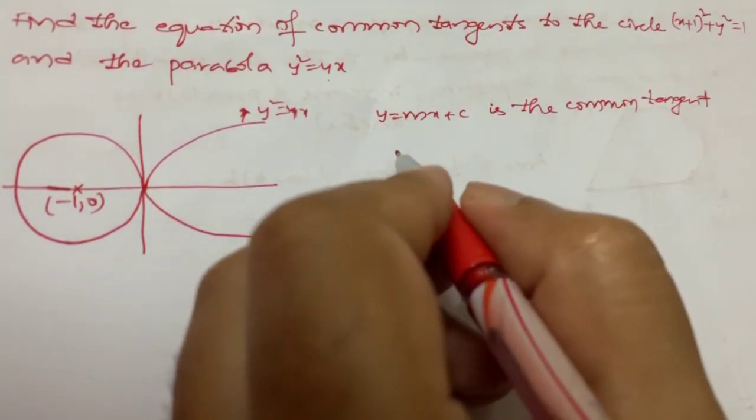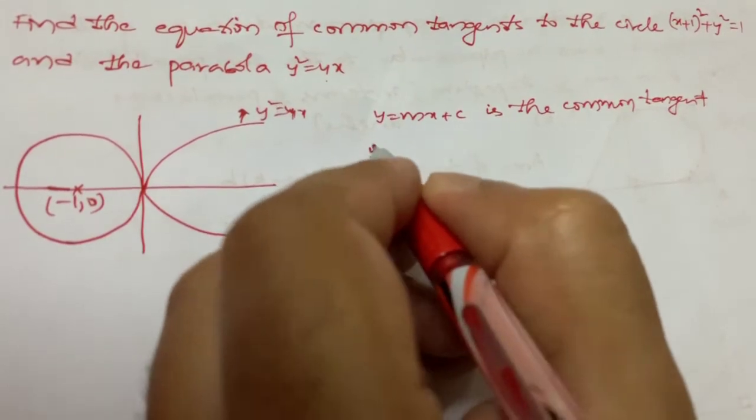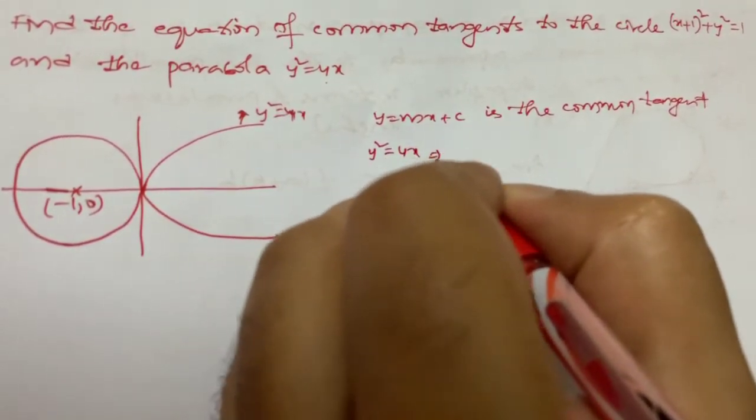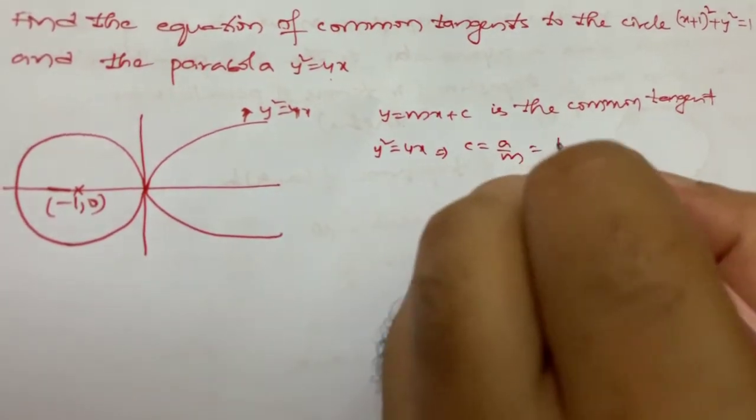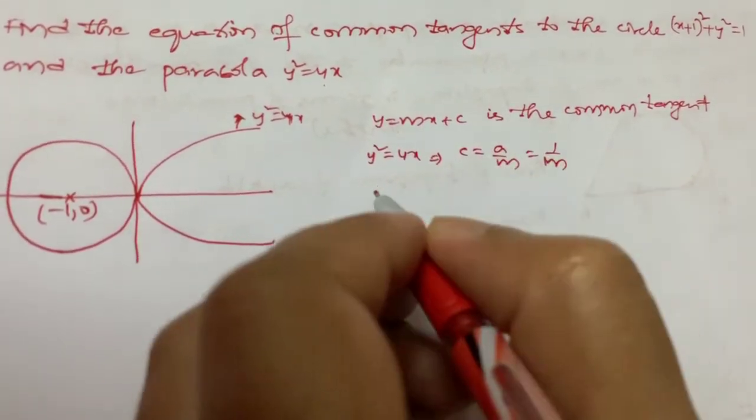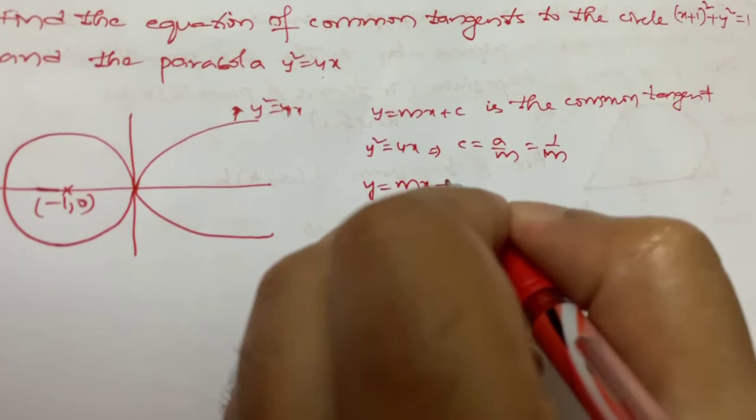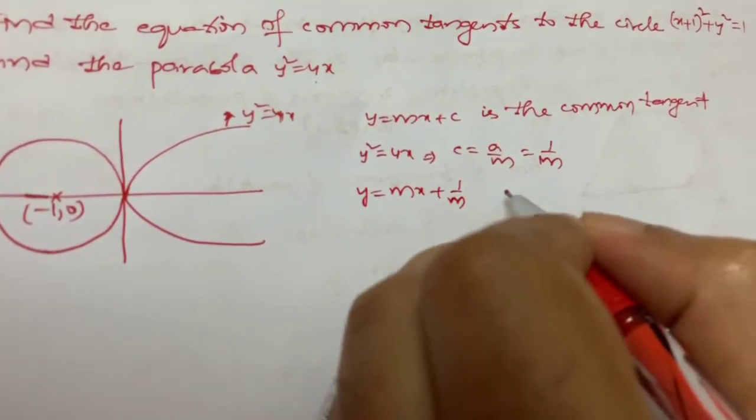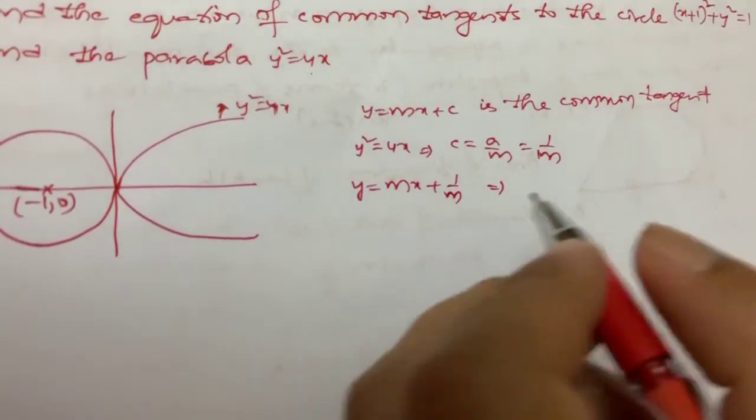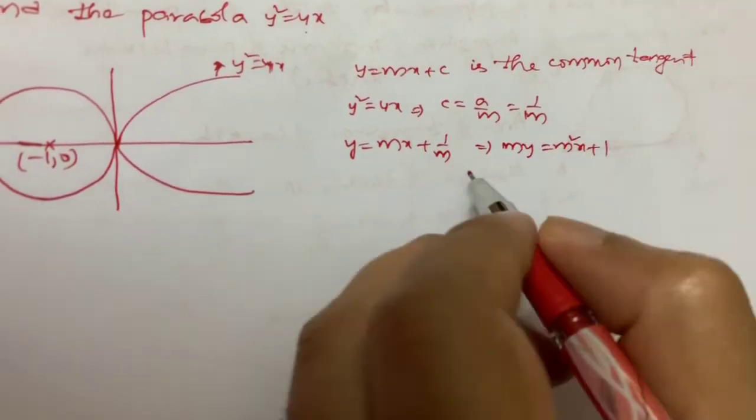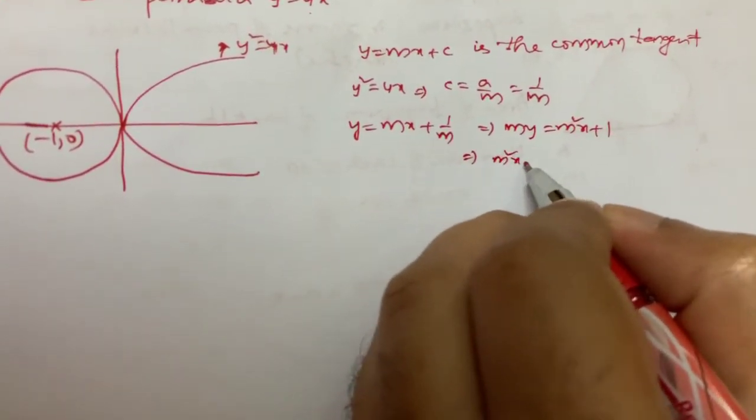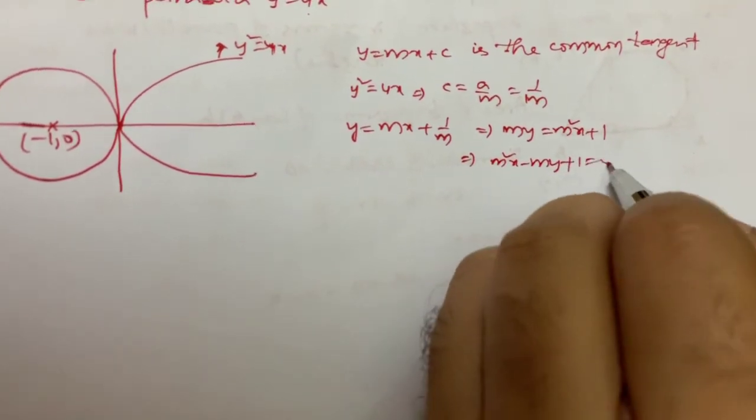So if it is common tangent for the parabola y² = 4x, then c = a/m. Here a is 1, so c = 1/m. So y = mx + 1/m is the equation of tangent. So my = m²x + 1. If I simplify this, m²x - my + 1 = 0.